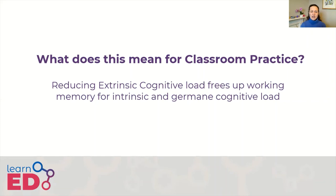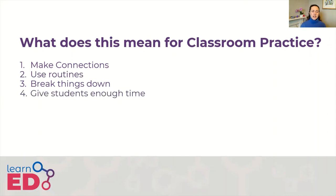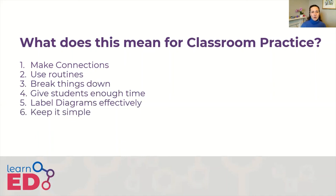So when planning a lesson, think about how to design it to reduce cognitive load. Here are ten things you can do. One: make connections between schemas that pupils already have and are likely to need during the lesson. Two: use routines so they don't have to process new instructions. Three: break things down so you are literally only processing four things at once. Four: give students enough time to process — don't rush from one thing to another. Five: label diagrams effectively — labels should be on the same slide or page as the diagram, with direct labels rather than a key. Six: keep it simple — don't put extraneous information on a PowerPoint; only include what is relevant.